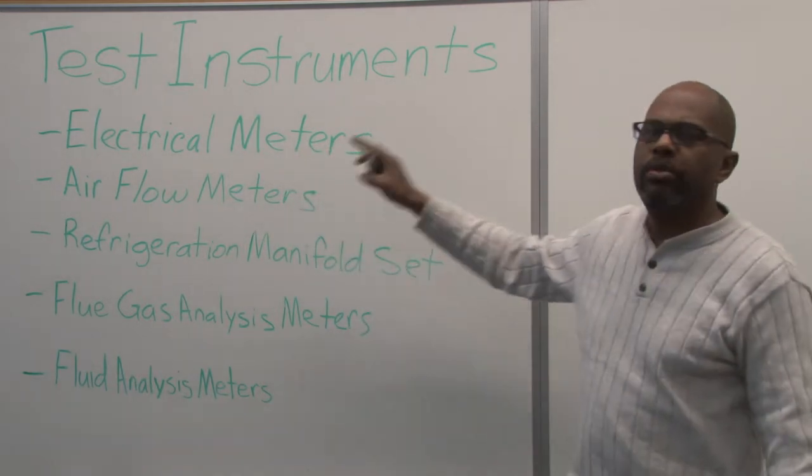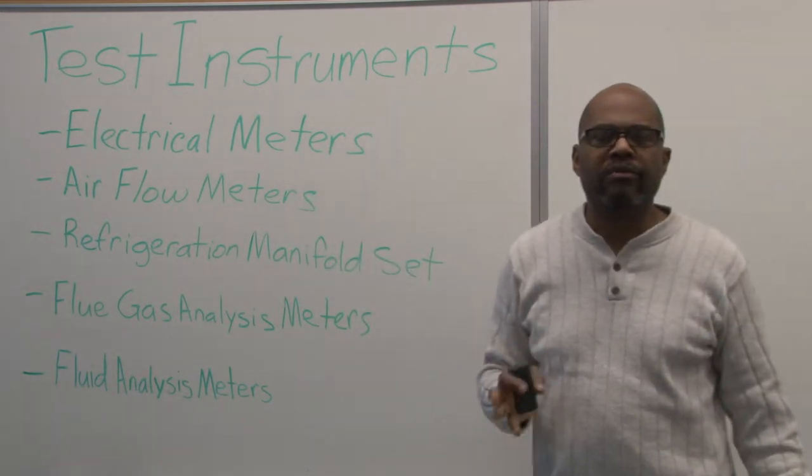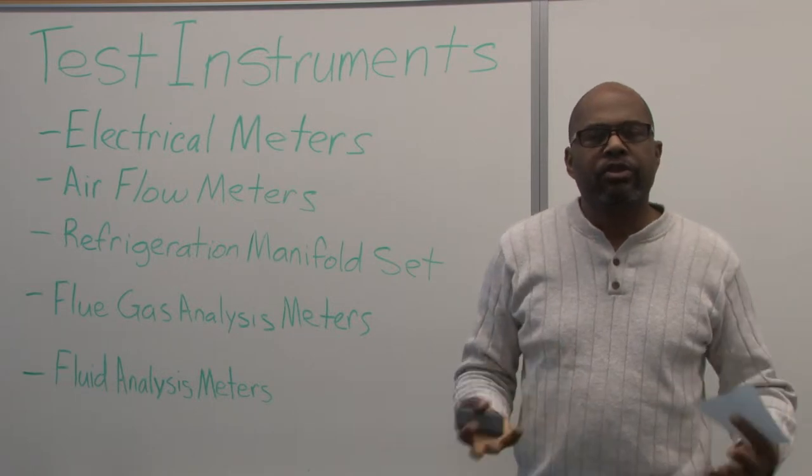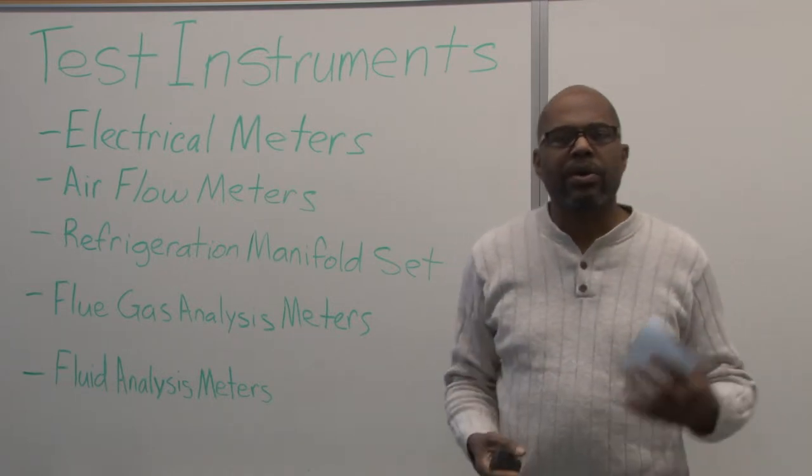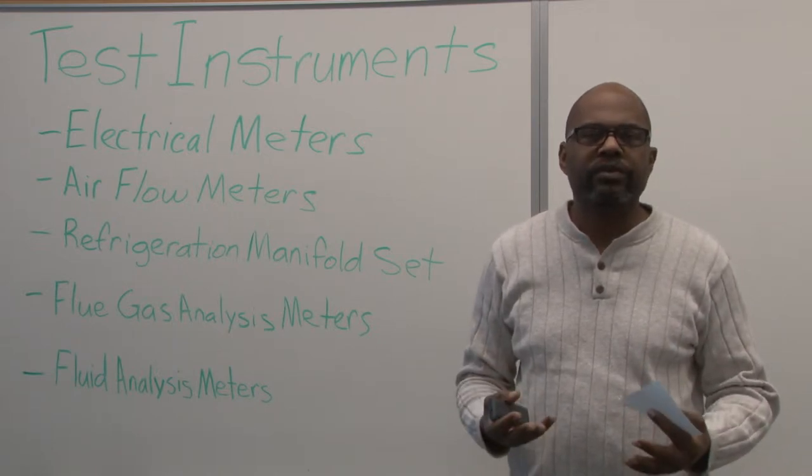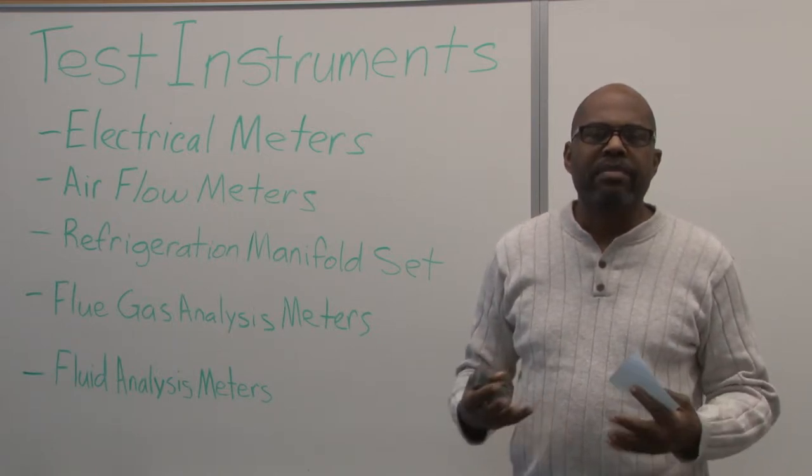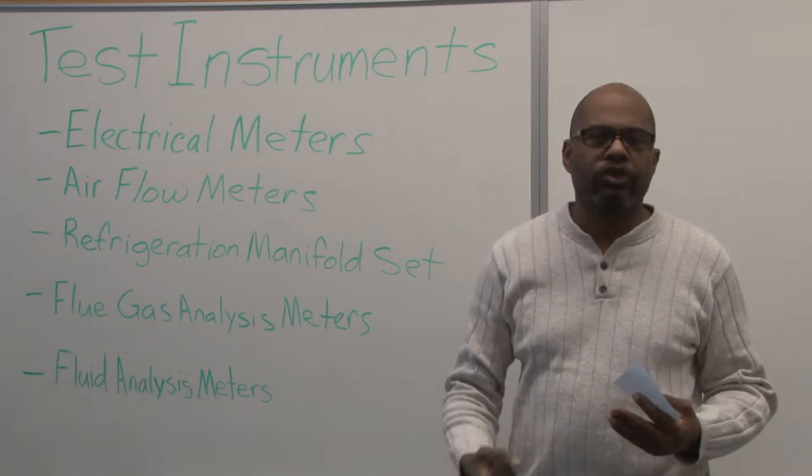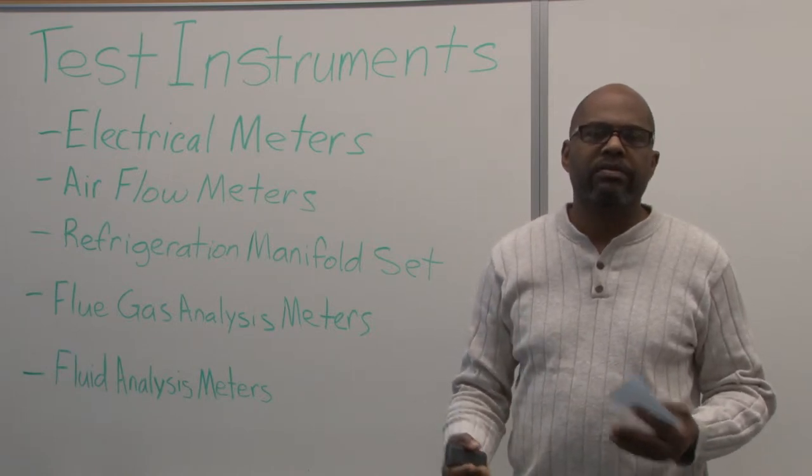The electrical meters, there are multiple different types of electrical meters we find. And electrical meters could be voltmeter or ampmeter or ohmmeter. Voltmeter, of course, reads the power or the force of the energy. The ampmeter reads the flow or the speed or velocity of the electricity.